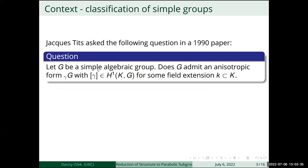The context is the work of Tits on the classification of simple groups, in particular one of the last papers he published on this subject. He asked the following question: G is a simple algebraic group, and the question is does G admit an anisotropic form — G twisted by gamma — where gamma is a G-torsor? Note that these are not all inner forms of G, because we are not taking cocycles in the adjoint group; we're specifically asking about G-torsors.